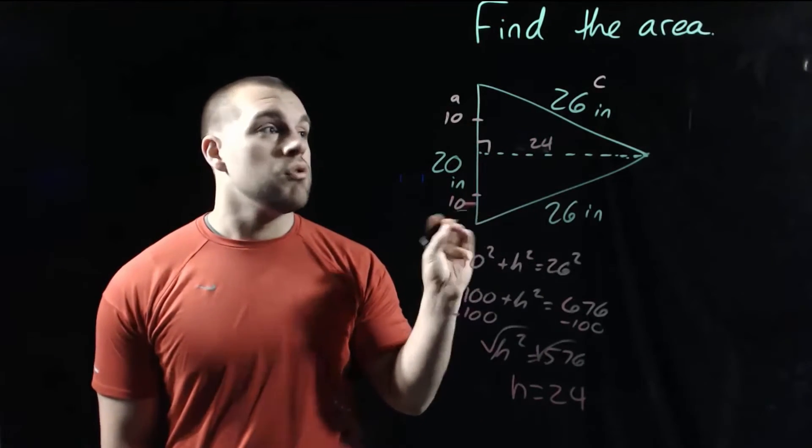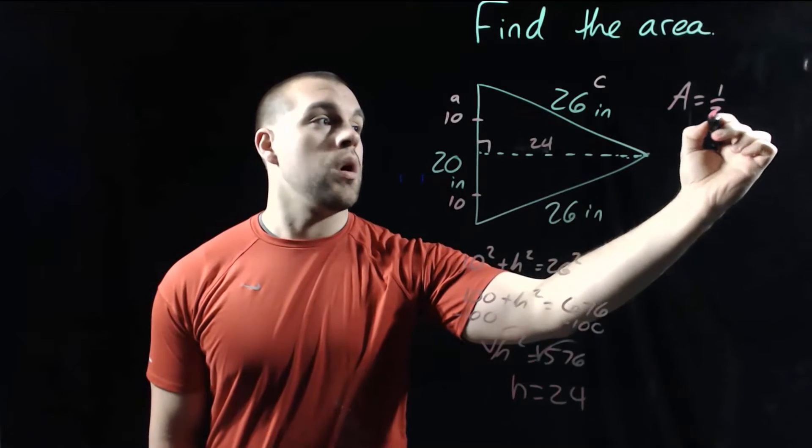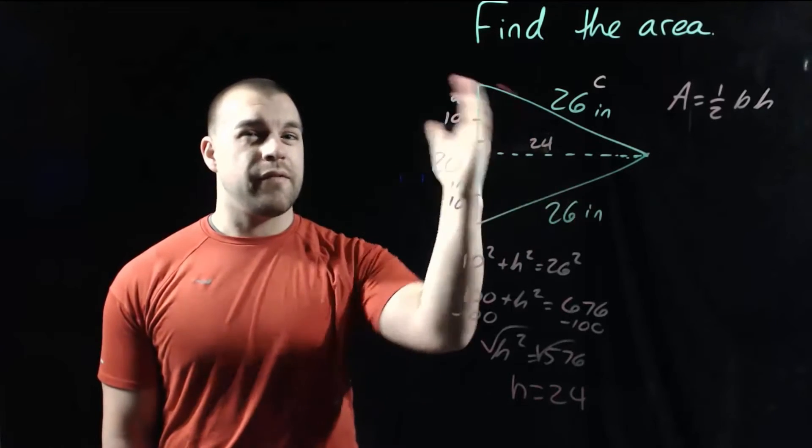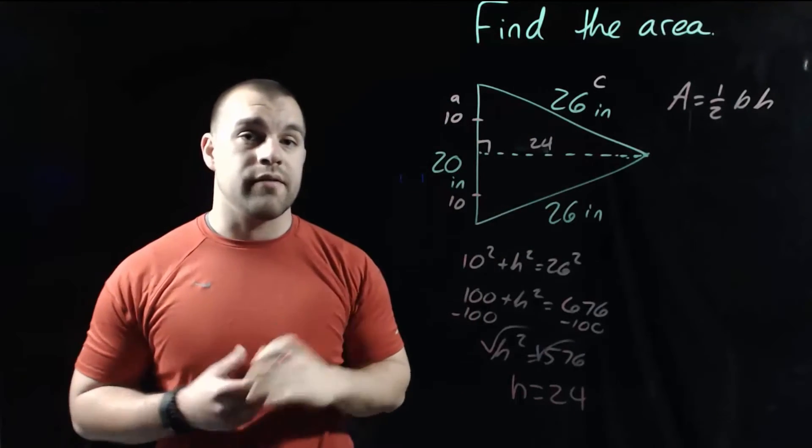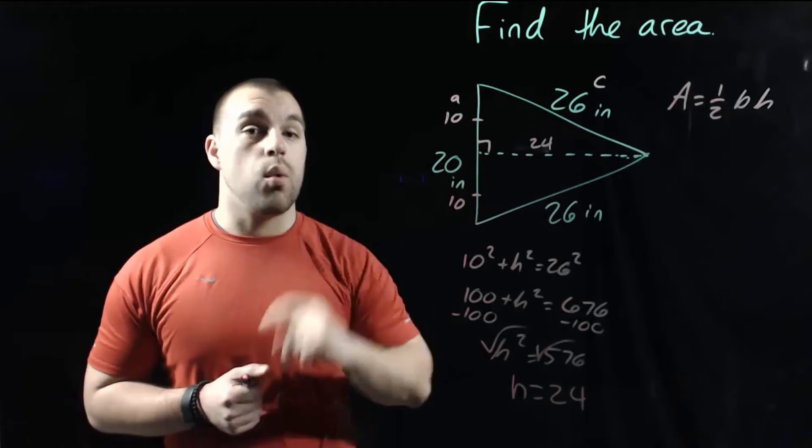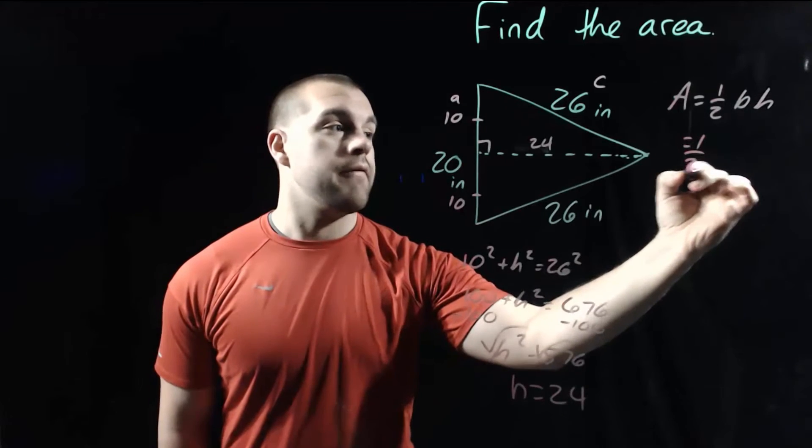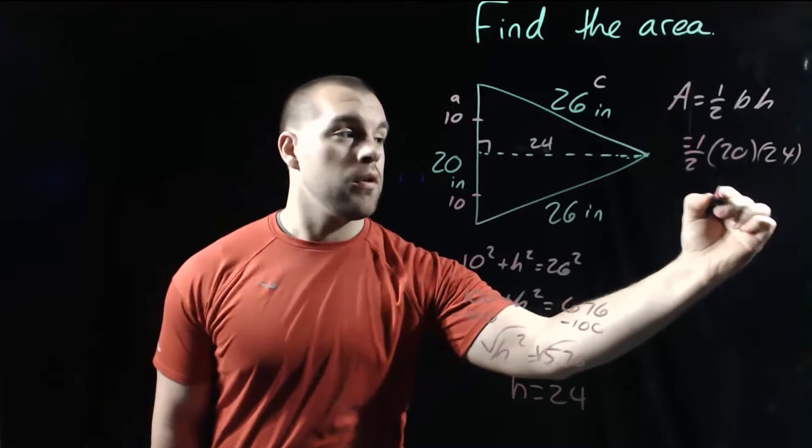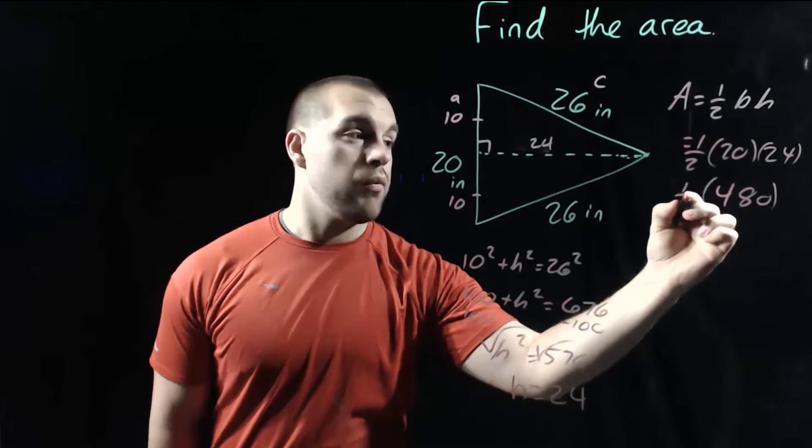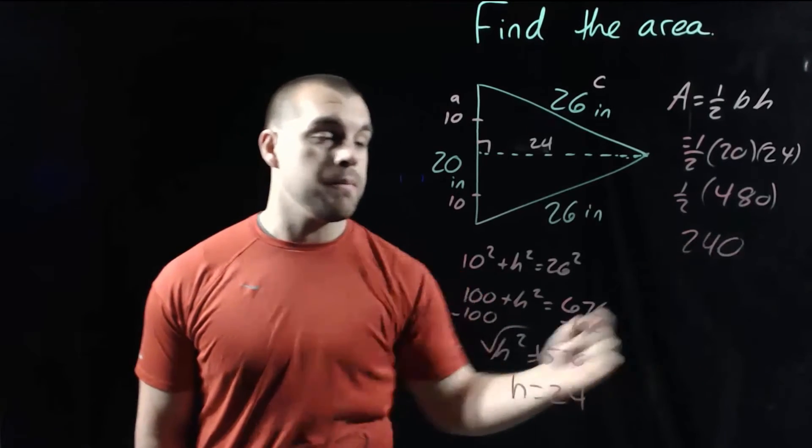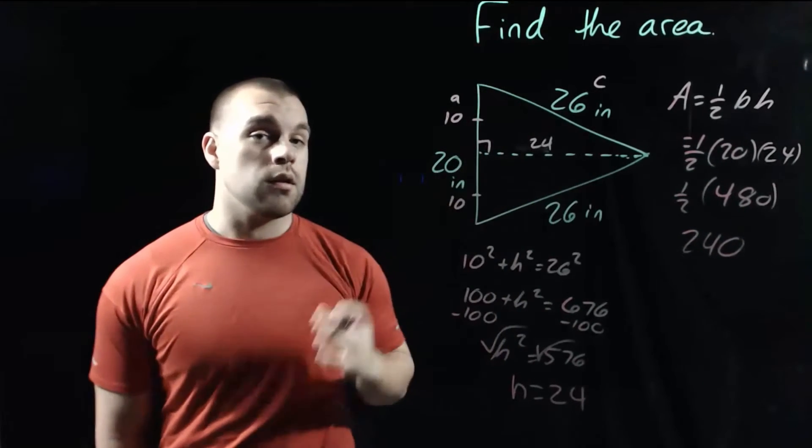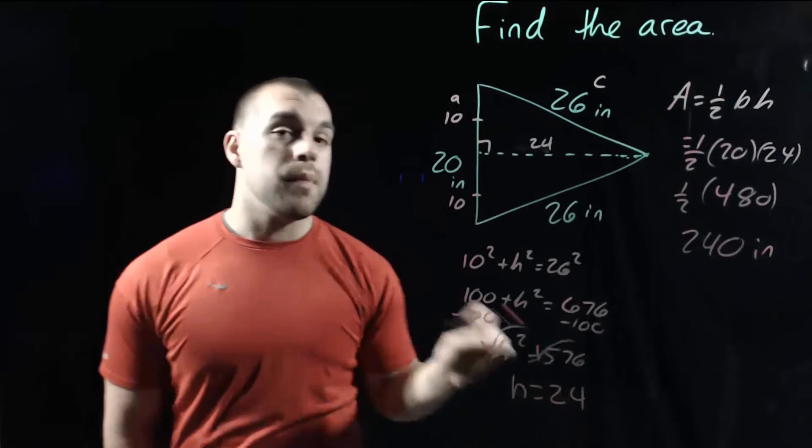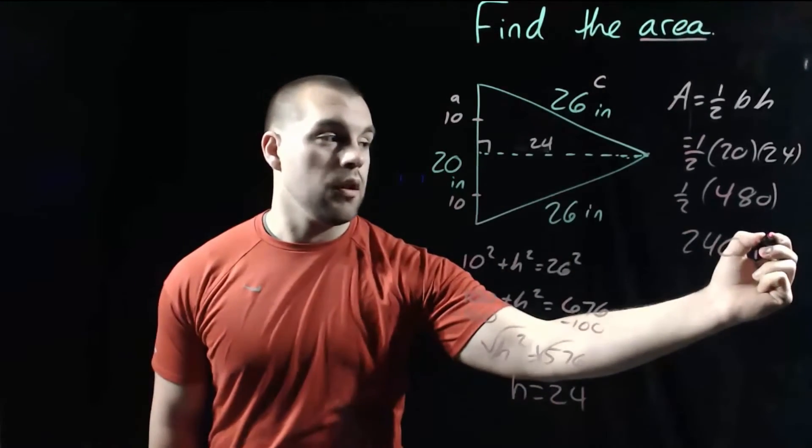But now we want to find the area. Remember, area is one half times the base times the height. Now this triangle is tipped on its side. So we need to kind of flip it up in our mind to figure out what the base and the height of our triangle are going to be. The height is the 24. The 20 is going to be the base. So we've got one half times 20 times 24. Now if we take 20 times 24, that's 480. And then if we do half of that, we end up getting 240. Since the sides of our triangle are labeled in inches, we also need to label our answer. This is going to be inches. But anytime we're dealing with an area problem, we have to put a little squared power on that.